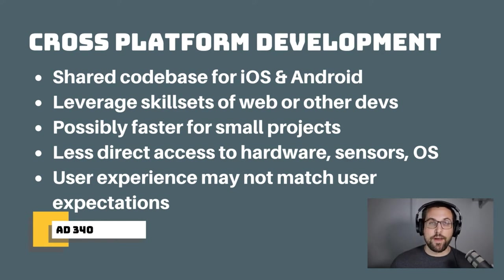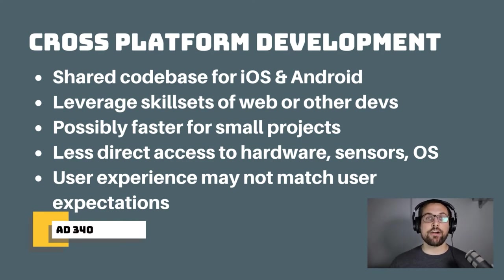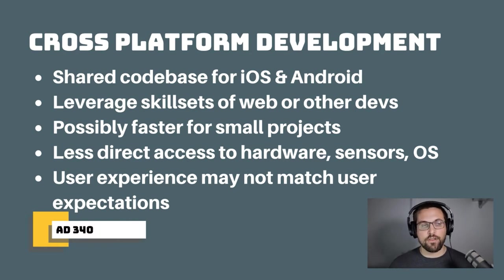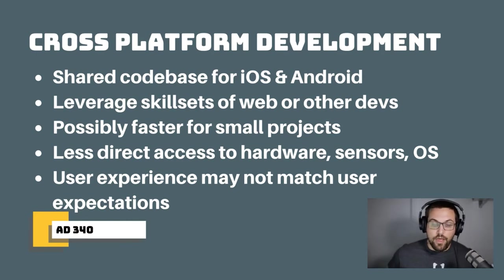One drawback to cross-platform applications is that you have less direct access to hardware and sensors. Usually cross-platform sits on top of the native code — you might have the hardware at the bottom, then the native operating system like Android, and then something like Flutter sits on top of that. Each layer you add abstracts things and makes it more difficult to get to low-level performance and sensors. And one of the biggest challenges with cross-platform development is building user experiences that look and feel native, since you're building a single code base for both platforms.